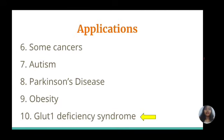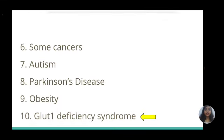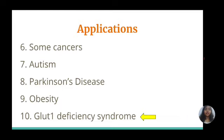Glucose transporter 1 deficiency syndrome, or GLUT1 deficiency syndrome, is a rare genetic disorder involving the deficiency of a special protein that helps move blood sugar into the brain. Symptoms usually begin shortly after birth and include developmental delay, difficulty with movement, and sometimes seizures. The ketogenic diet has been shown to improve seizures and other symptoms in children with GLUT1 deficiency syndrome.